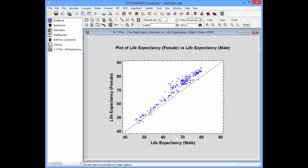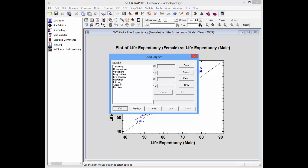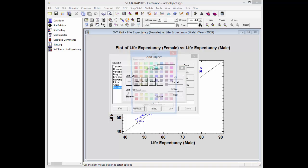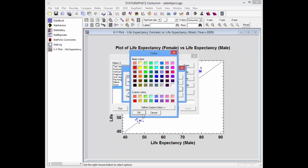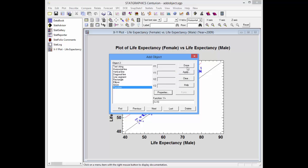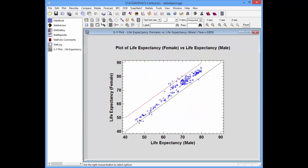I'd now like to add a second reference line to the plot showing where female life expectancy is 10 years greater than male life expectancy. I'll go back to the add object dialog box, select function again, this time type in X plus 10. Before I plot it however, I'll press properties and then colors and ask for this reference line to be plotted in red. You can see that a few countries are even above this reference line.